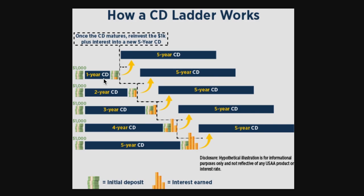If you're not sure when you'll need cash, let's say you have a big purchase coming up and you don't know when it will be, you can stagger your CDs — every three months, every six months, every year — whatever is most appropriate for you. In this case, you know you're getting $1,000 plus interest every year, and as you reinvest it, you're growing that money more and more at a fixed rate.